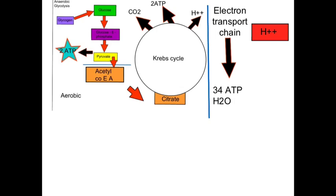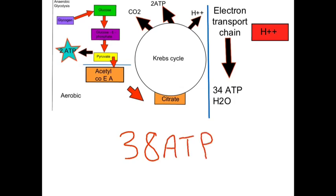In the electron transport chain, a series of carrier molecules are involved in the oxidizing of hydrogen contained within the hydrogen carriers, producing water as a by-product and generating enough energy to resynthesize 34 molecules of ATP. That gives a grand total of 38 molecules of ATP for the aerobic breakdown of glucose.